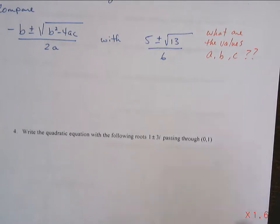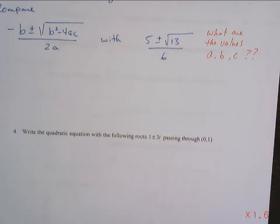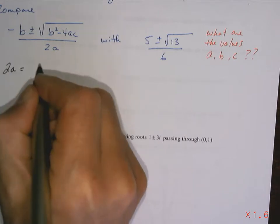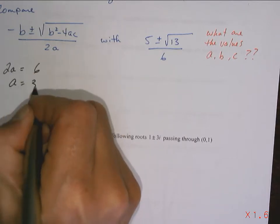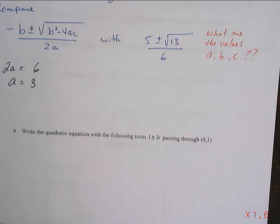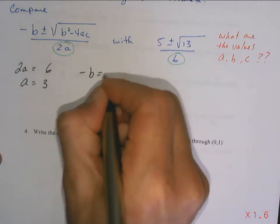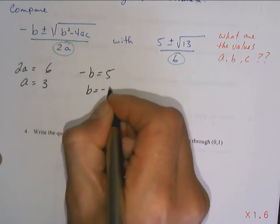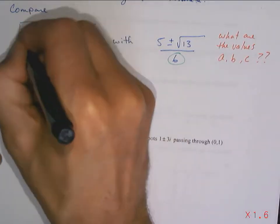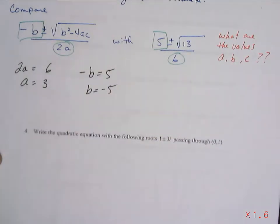Who wants to go first? a equals 3 — how'd you get it? He might be onto something there. He said that this and this are in the same spot, so they better be equal. I can live with that. Next — because you're saying that negative b and 5 are in the same spot, so they should be equal to each other.